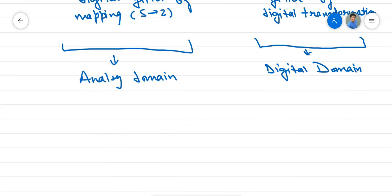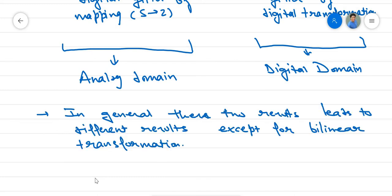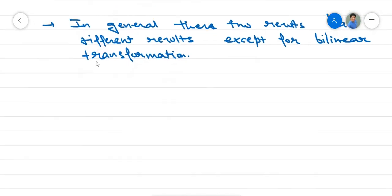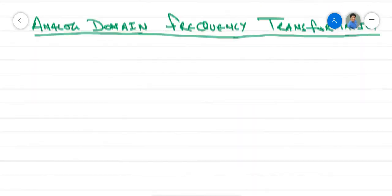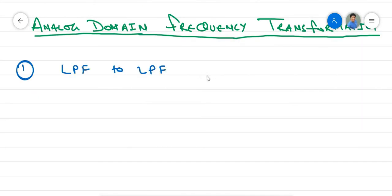In general, the results obtained from the analog domain or digital domain are not the same, except for the case of bilinear transformations. Now, after characterizing the frequency transformation, we will start with analog domain frequency transformation. We will discuss in part 1: low pass to low pass filter transformation.